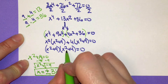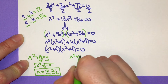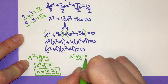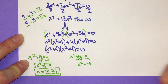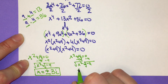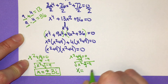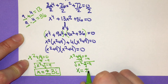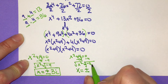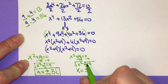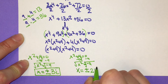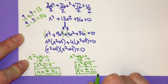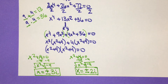Also set x squared plus 4 equal to 0. Subtract 4 on both sides to get x squared equals negative 4. Take the square root — accounting for positive and negative — the square root of 4 is 2 and square root of negative 1 is i, so x equals positive and negative 2i. This polynomial has four answers in total.